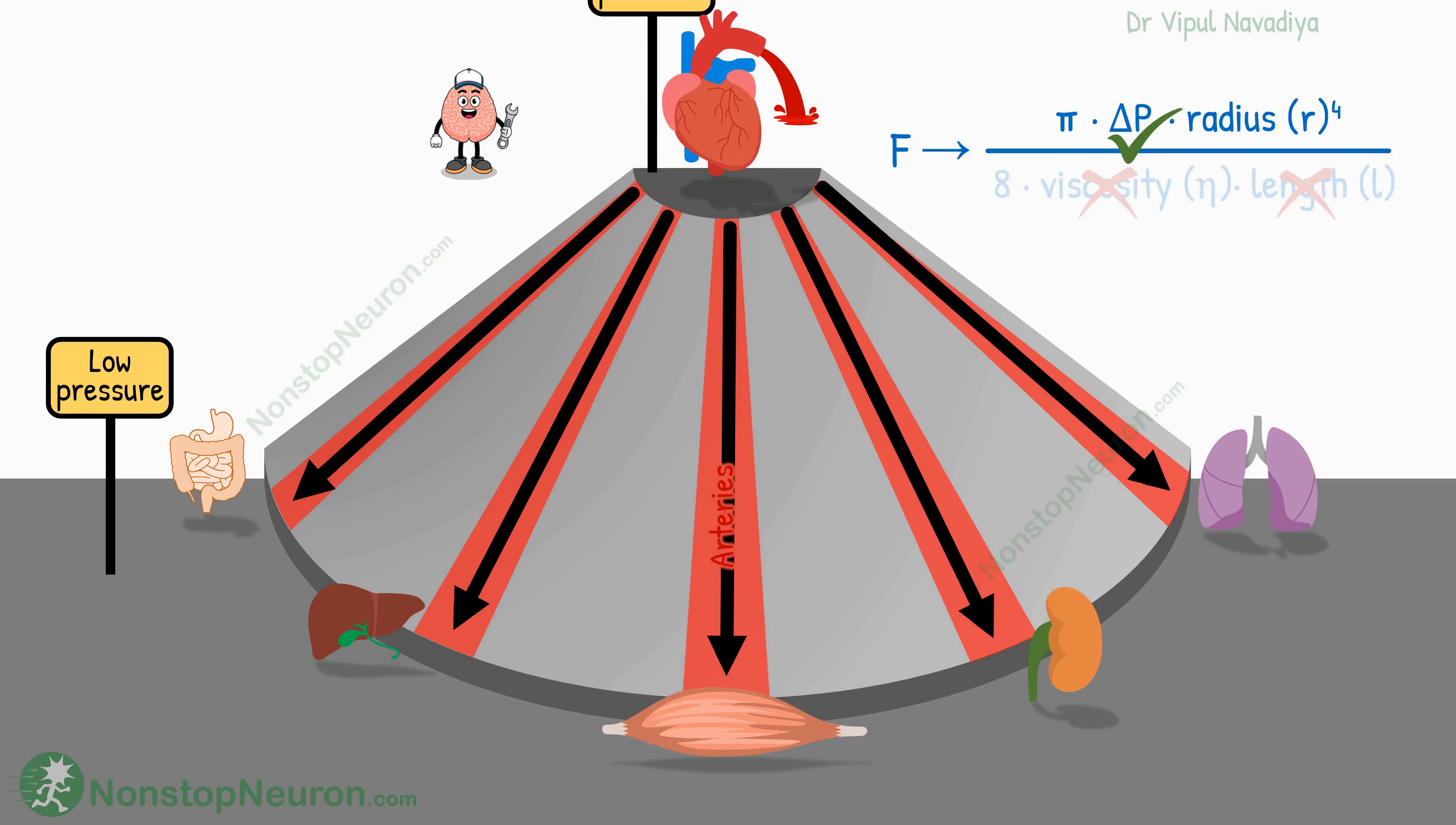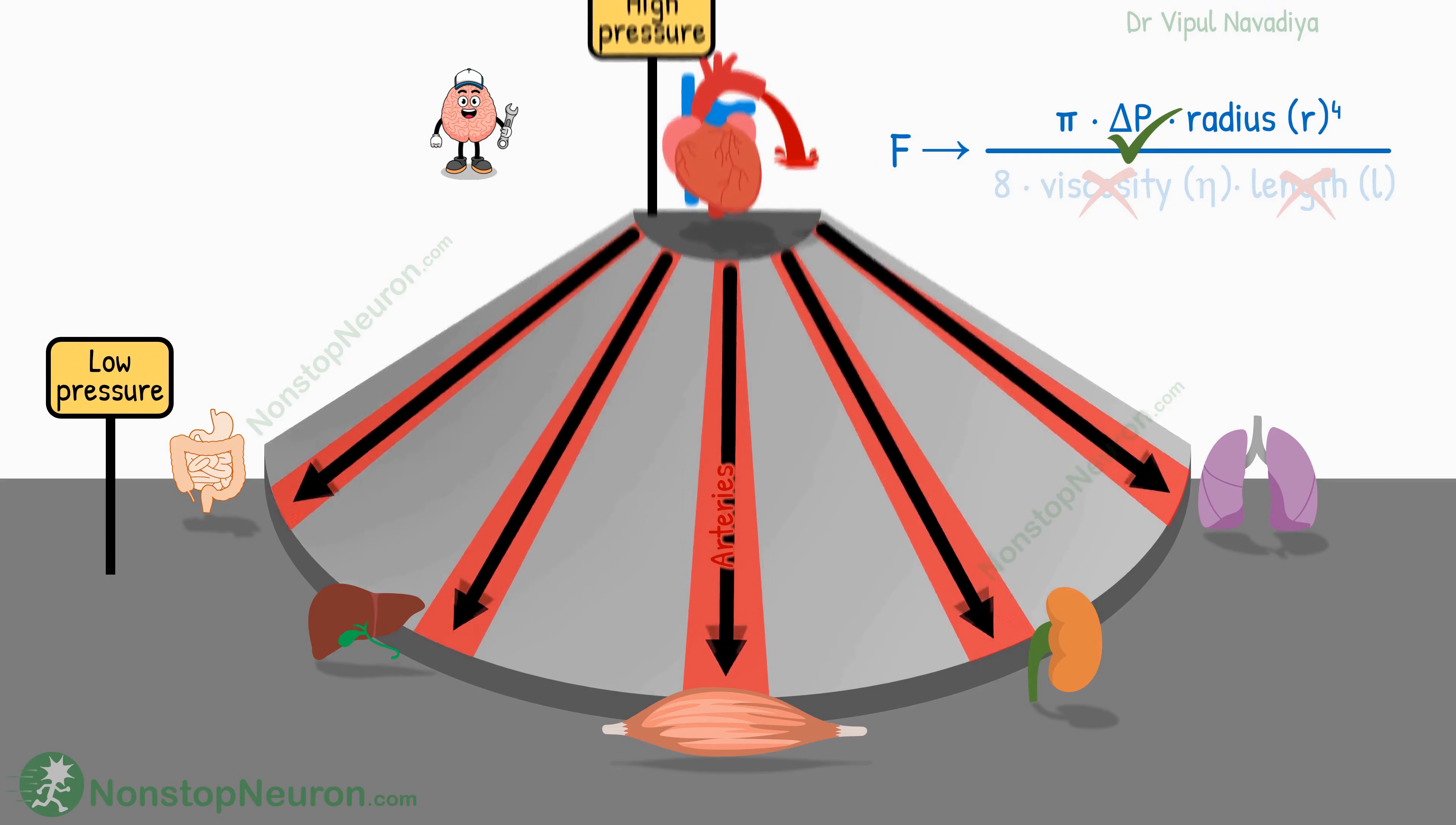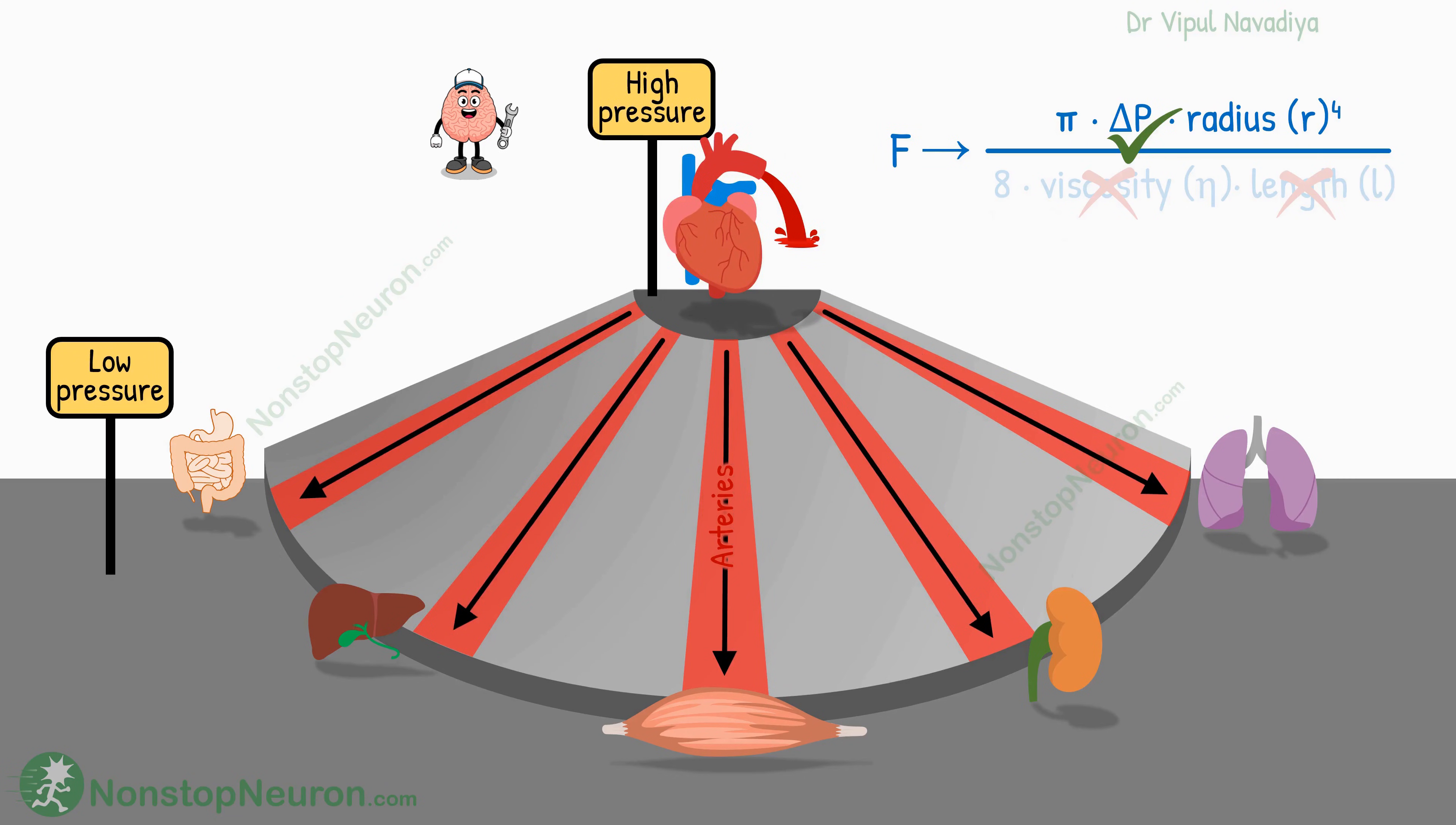And when the pumping activity decreases, this central pressure falls. And this tends to decrease the flow to all the organs. In a nutshell, the primary role of pressure is to generate a driving force for the flow. So its changes tend to affect blood flow to all the organs.